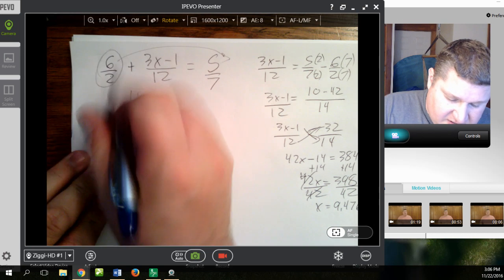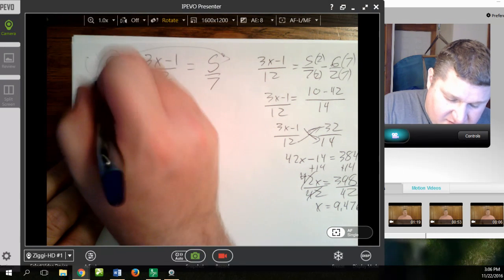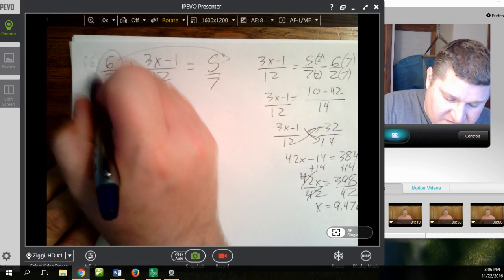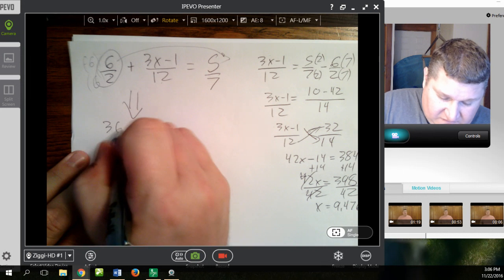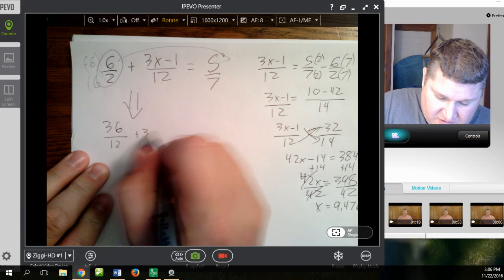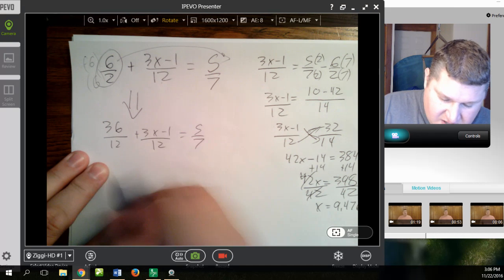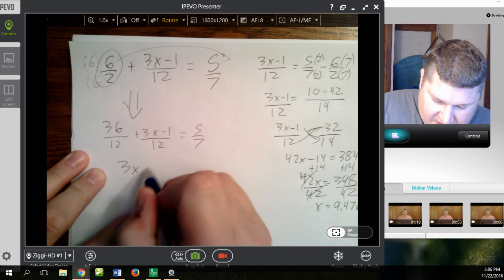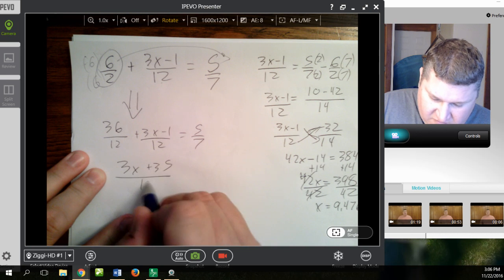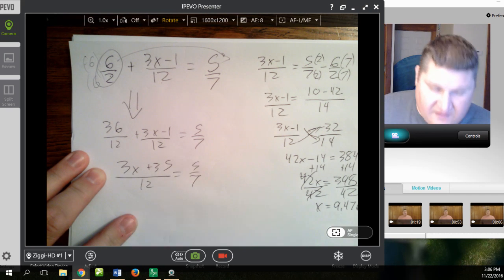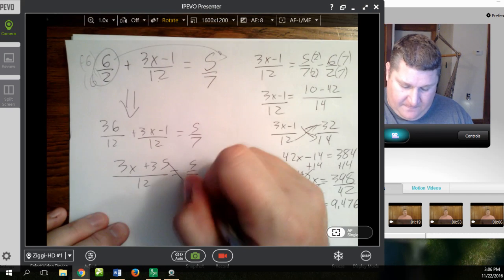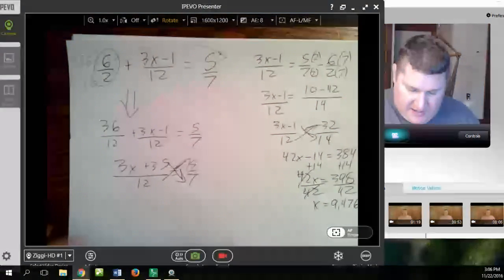Method 2 for this would be, let's go right down and find common denominators here. That's a 12, so I need some 6s. So, I have 36 over 12 plus 3x minus 1 over 12 equals 5 over 7. Now, let's put them together. 3x plus 35 over 12 equals 5 over 7. At this point, cross-multiply and solve.